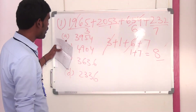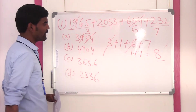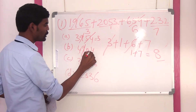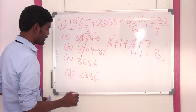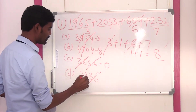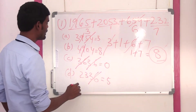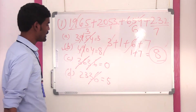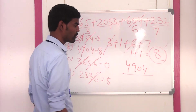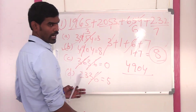So we have to find the digit sum for all options. Option A: 9 cancelled, 5 plus 4 is 9 — cancel, digit sum is 3. Option B: 9 cancelled, 4 plus 0 plus 4 is 8. Option C: 6 plus 3 is 9, so digit sum is 0. We need digit sum 8, so option B is the correct answer. The answer is 4904, with digit sum 8.